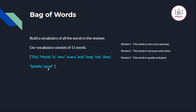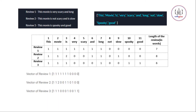After building the vocabulary, we use it as our feature set. The vocabulary — the unique words in our reviews — now becomes our features, forming the columns of our matrix. So 'this', 'movie', 'is', 'very', and so on are now our feature columns.